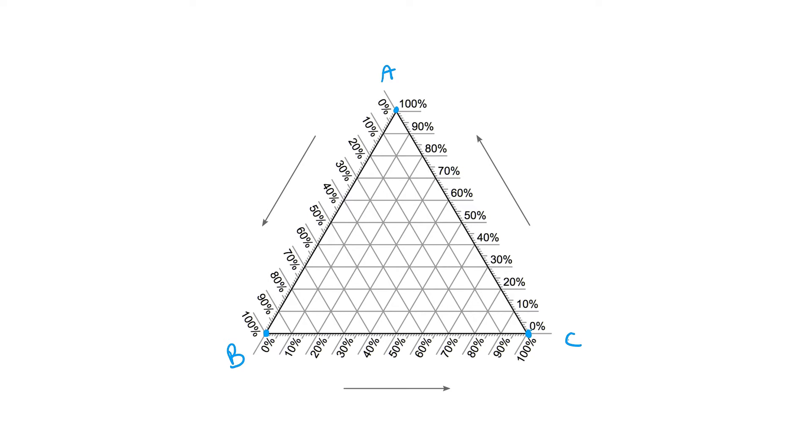At the apexes it's quite easy to interpret the graph, however as we move into the middle of the triangle it becomes a bit more difficult. So say for example we have a point here on our graph. Now what does this represent?